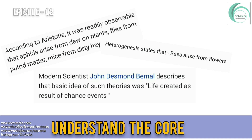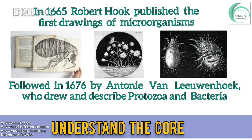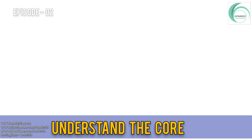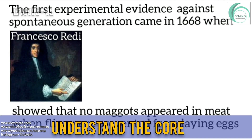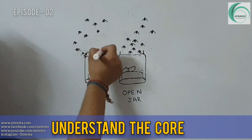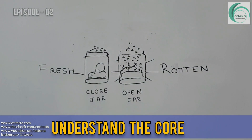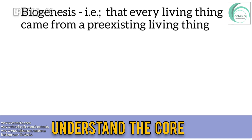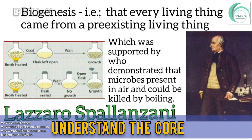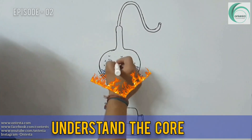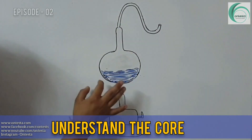Modern scientist John Desmond Bernal described the idea that life was created just by chance events. In 1665, Robert Hooke published the first drawing of microorganisms, followed by Antonie van Leeuwenhoek in 1676. The first experimental evidence against spontaneous generation came in 1668, when Francisco Redi showed that no maggots appear in meat when flies are prevented from laying eggs. These experiments were not satisfactory for many spontaneous generation promoters. Then Lazzaro Spallanzani supported biogenesis and demonstrated that microbes in the air could be killed by boiling. In 1861, Louis Pasteur performed a series of experiments that demolished the theory of spontaneous generation completely.